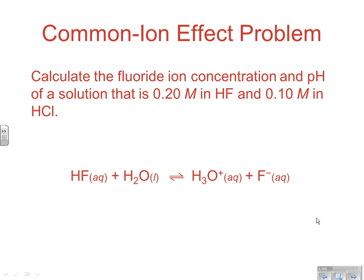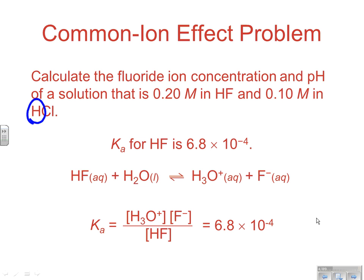Here's a typical common ion effect problem. This should look familiar, because back in Chapter 16, in our FRQ review, we did a problem that looked very much like this. Calculate the fluoride ion concentration and pH of a solution that is 0.20 molar in HF, so we have hydrofluoric acid, and we're adding to it the strong electrolyte HCl, which is going to contribute this species. If HCl is a strong electrolyte, it's going to give us H plus and Cl minus. The common ion here would be the H plus concentration.